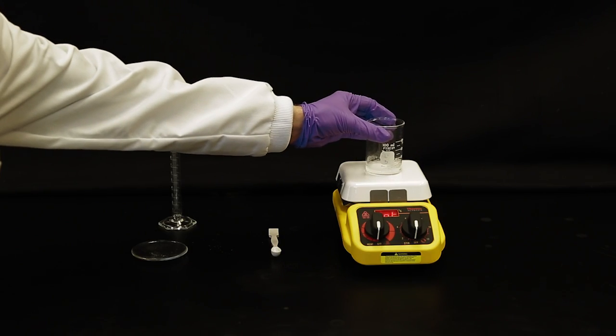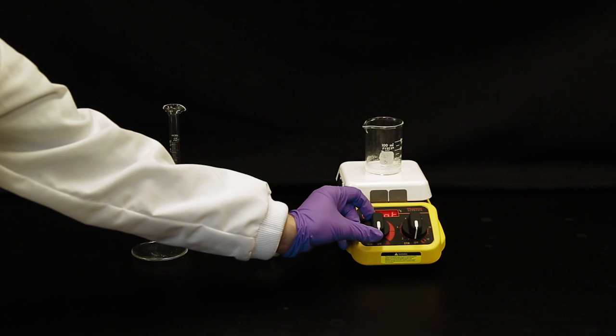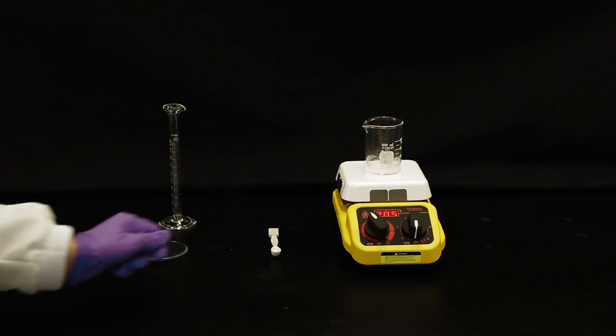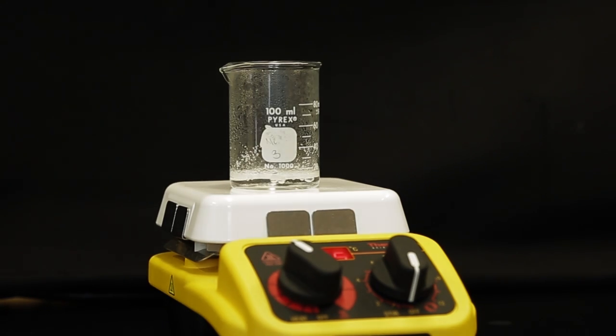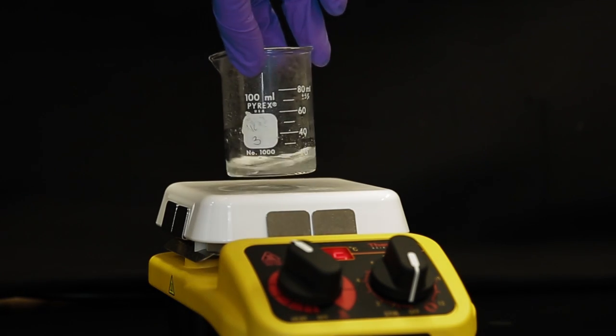Place the beaker on a hot plate. Heating the mixture until everything is dissolved ensures that the acetylsalicylic acid crystals release any trapped salicylamide into the solution.